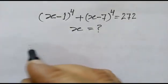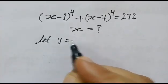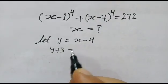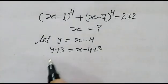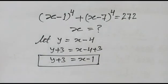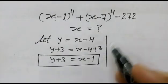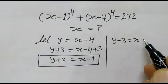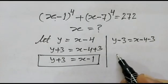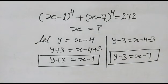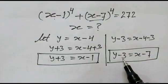Let y be equal to x minus 4. If we add 3 on both sides, x minus 4 plus 3 gives y plus 3 is equal to x minus 1. Similarly, if we subtract 3 on both sides, y minus 3 is equal to x minus 4 minus 3, so y minus 3 is equal to x minus 7. So in place of x minus 1 we have y plus 3, and in place of x minus 7 we have y minus 3.